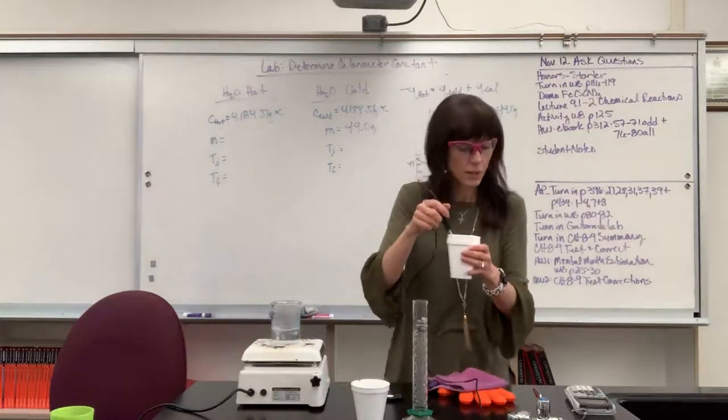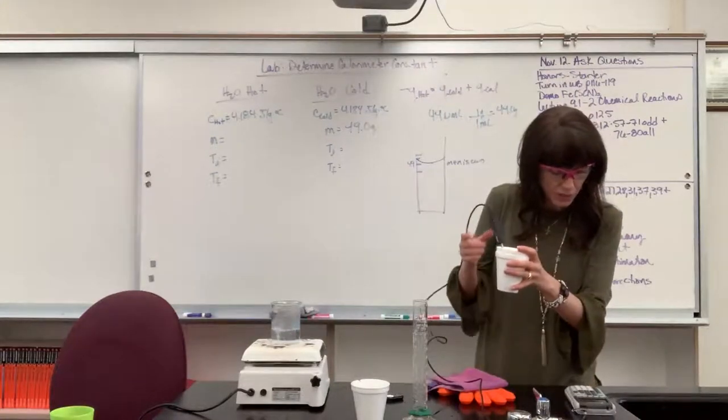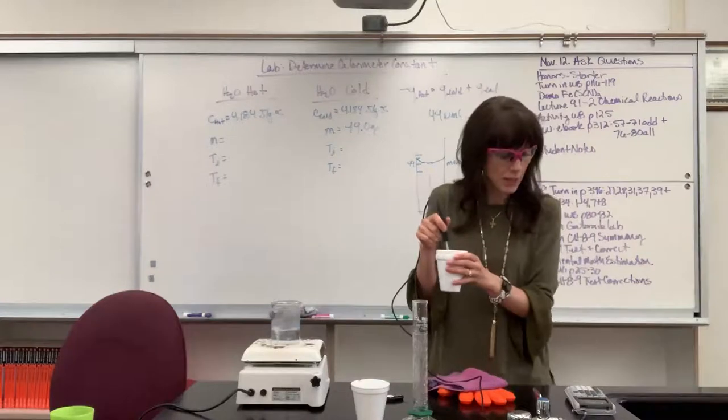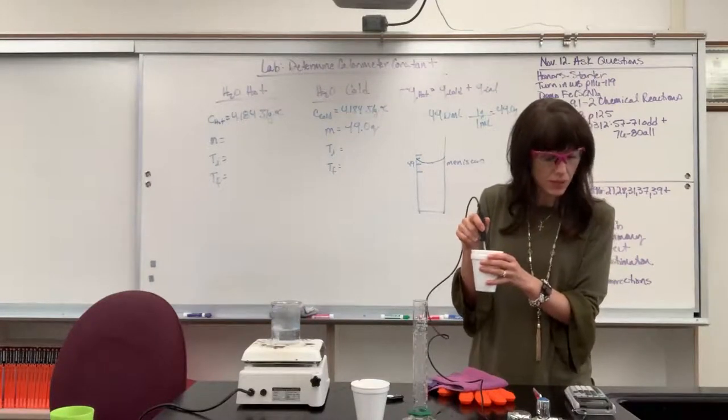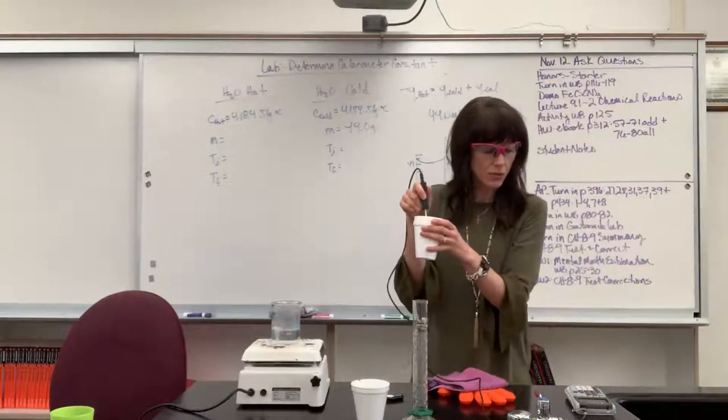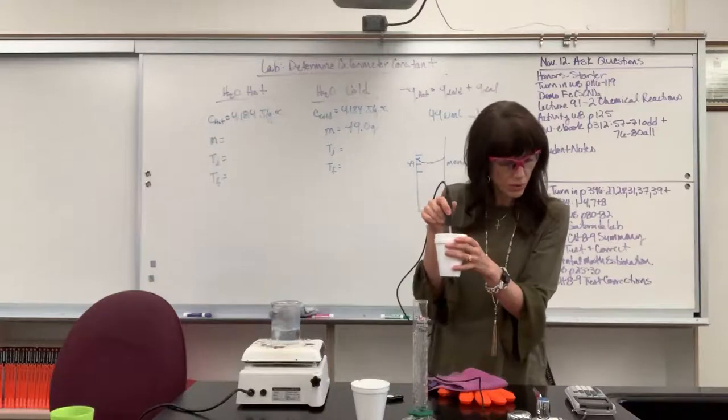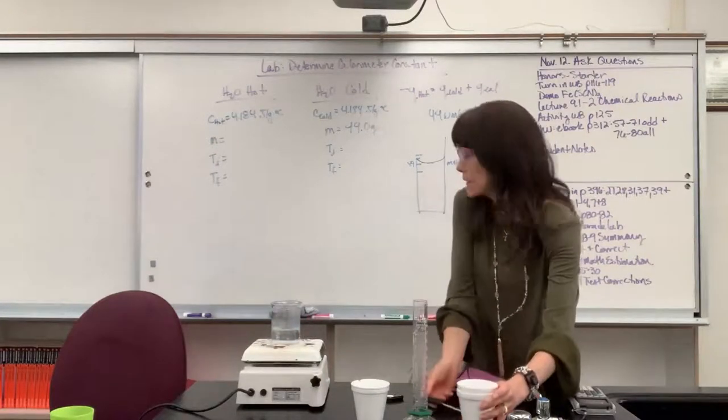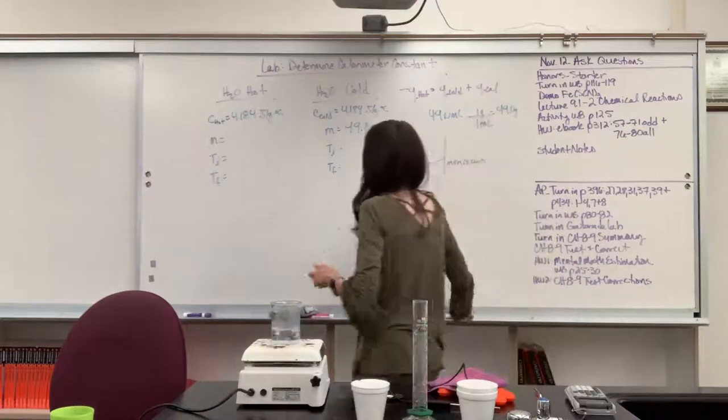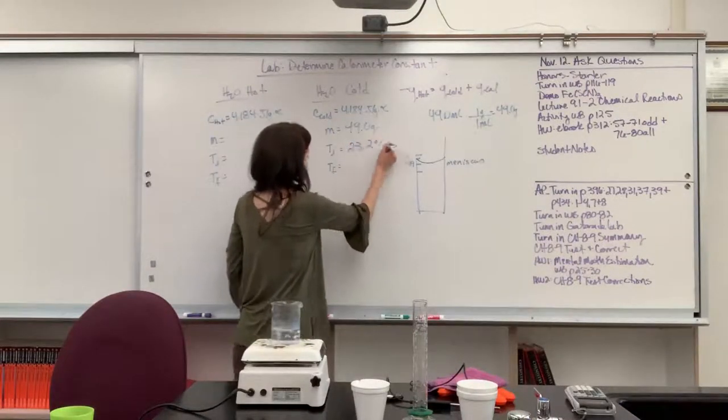And then I'm going to stir it. Oh, and do you like my temperature probe? Let's make sure I can read it here. Make sure that it's stable, that it's not moving. Okay, it's holding. So the temperature of the water and the cup. So the cup and the water are in thermal equilibrium, and it's stable. It's 23.2 degrees C. Let's write that down. So the initial temperature of my cold water, 23.2 degrees C.